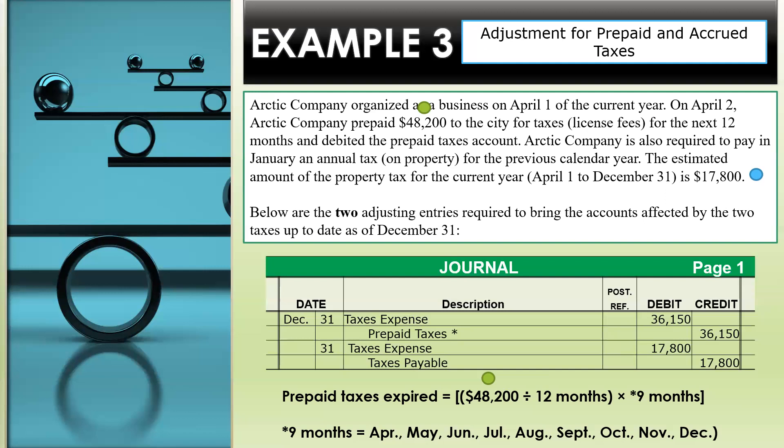For the next transaction, this one involves that $17,800 from the transaction. This involves a debit to taxes expense in the amount of $17,800, and then a credit to taxes payable in the amount of $17,800. So this is an example of a transaction impacting two adjusting entries.